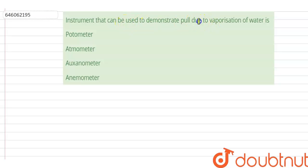that can be used to demonstrate pull due to vaporization of water. The options are photometer, atmometer, xanometer, and anemometer. So the correct option is atmometer. Atmometer or evaporimeter is a scientific instrument that is used